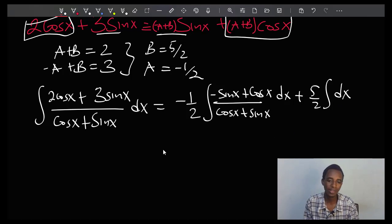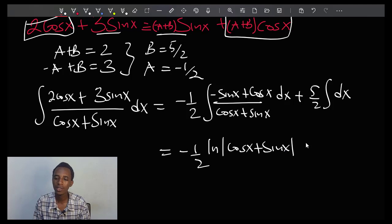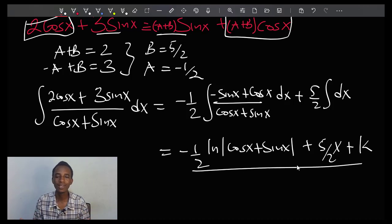And this is going to be negative 1 half times the natural log of the absolute value of cos x plus sin x, plus 5 over 2 times x, plus the constant of integration of course. And this is what we call splitting the numerator.